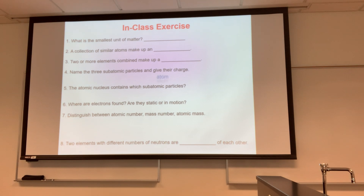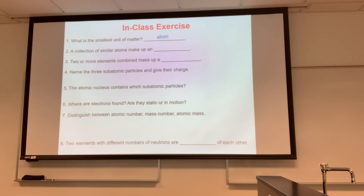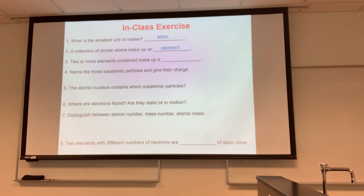Listen to the next question carefully: a collection of similar atoms makes up an — element. Similar atoms come together to make an element. Molecules and compounds are when two or more elements come together — they don't have to be different, but most of the time they are. The answer for number three is compound or molecule.